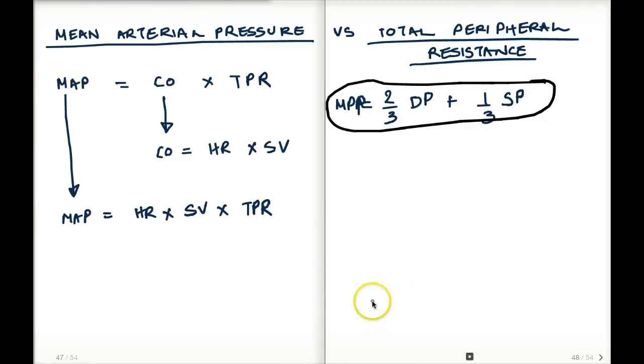That is my interpretation of mean arterial pressure and total peripheral resistance. I hope this makes it easier to understand and interpret.